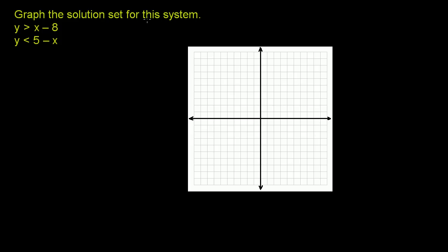We're asked to graph the solution set for this system. So we have two inequalities here, a system of inequalities. We know how to graph them independently. When you graph the system, you want to find the set of coordinates in the coordinate plane that satisfy both of these inequalities — essentially, we want to find out where these two inequalities overlap.